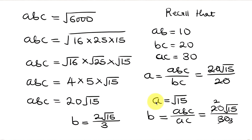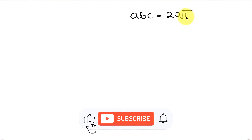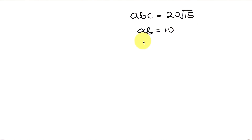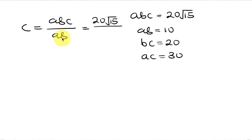We've found a and b, so now we find c. We have abc equal to 20 root 15, and from the question ab equals 10, bc equals 20, ac equals 30. To solve for c: c equals abc divided by ab, since ab cancels out. abc is 20 root 15 divided by ab which is 10. So 20 divided by 10 gives 2, making c equal to 2 root 15.